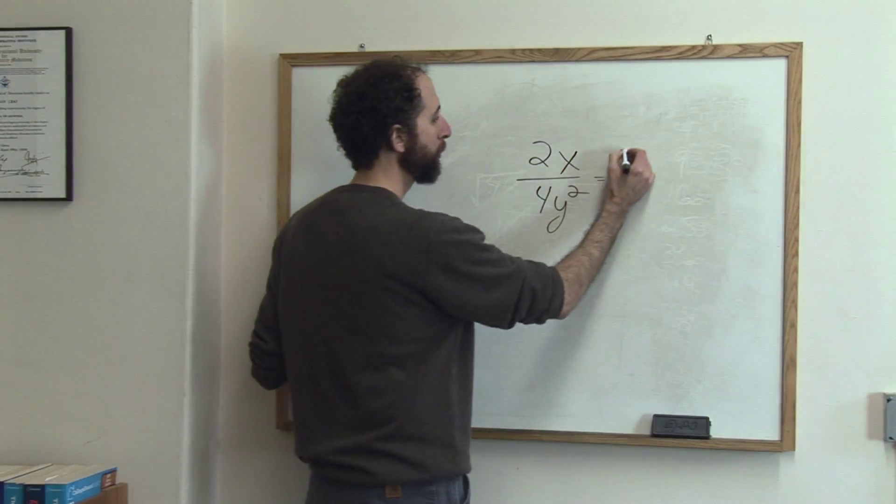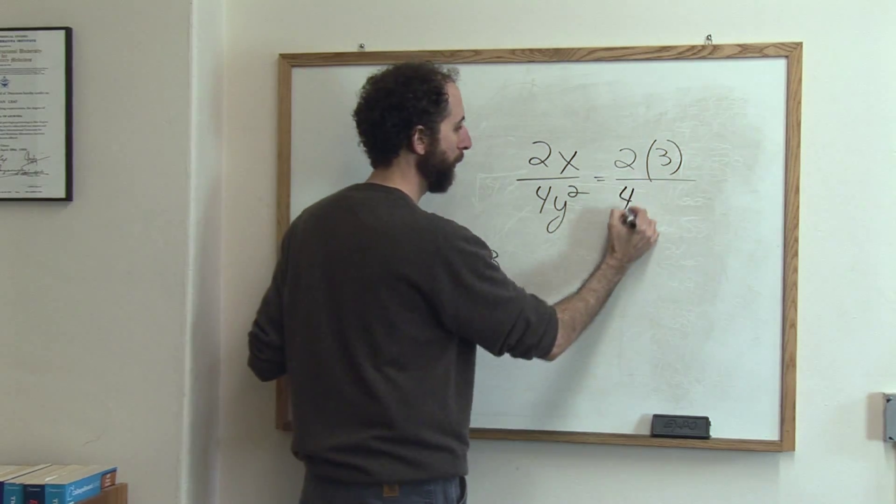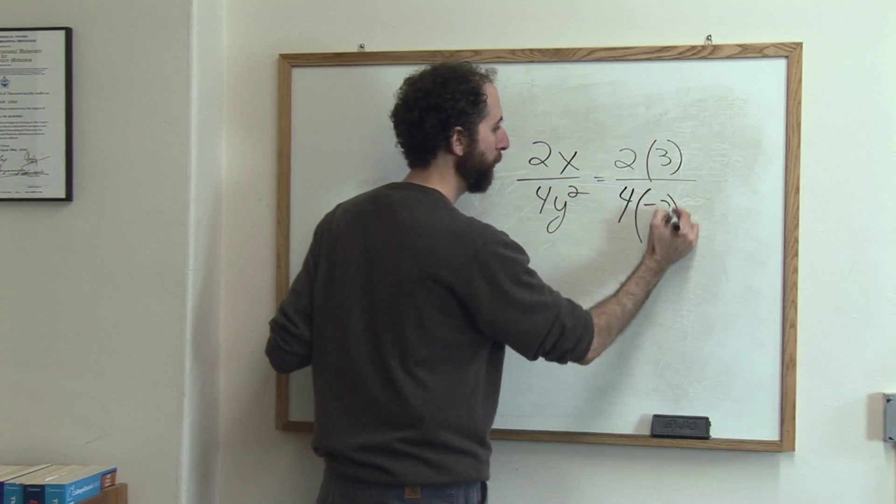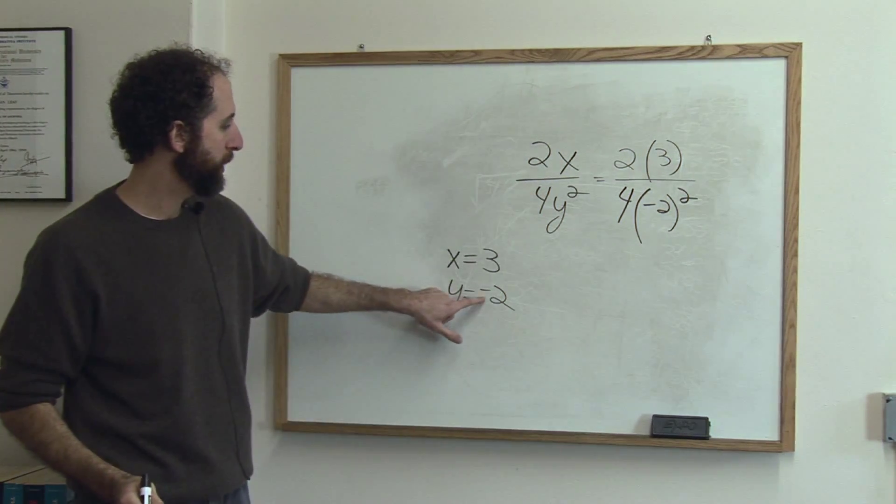So this would equal 2 times 3 over 4 times negative 2 squared. I've plugged in 3 for the x. I've plugged in negative 2 for the y.